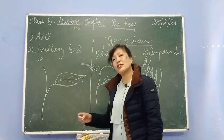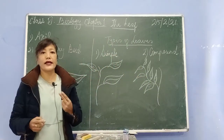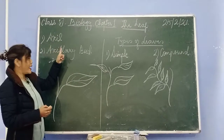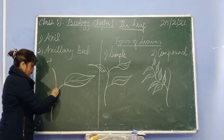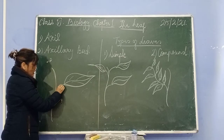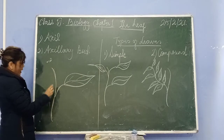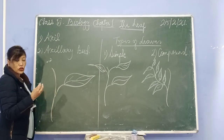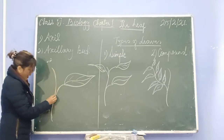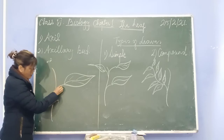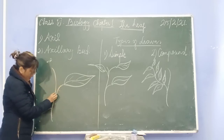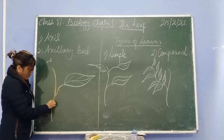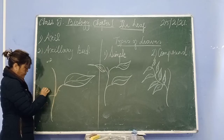Before that you need to understand two terms: axil and axillary bud. Now what do you mean by the term axil, A-X-I-L? Look here on the board — this is a stem and this is a leaf stalk and this is a leaf. Axil is the angle — just like you have done angle in geometry — so the axil is the angle between the stem and the leaf stalk. The other name of leaf stalk is petiole, so the angle between the petiole and the stem is called the axil.